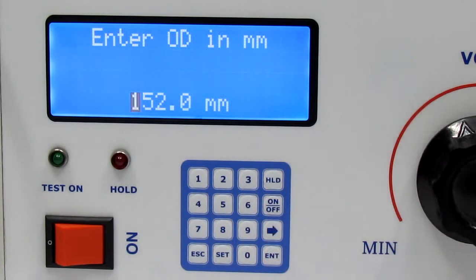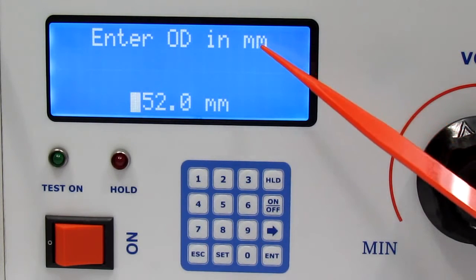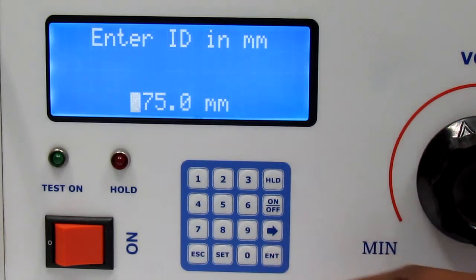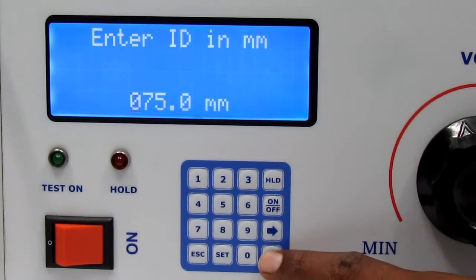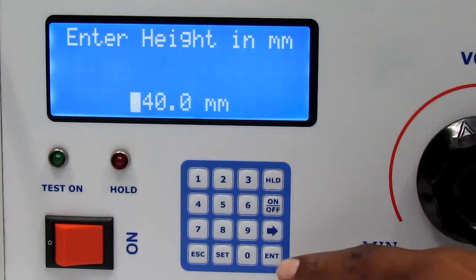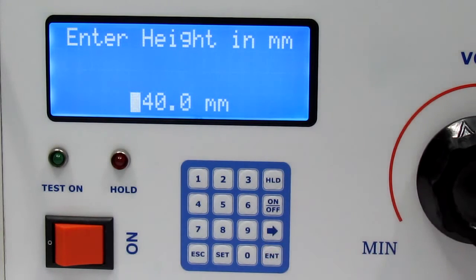Now you can see OD in millimeter. Here you have to enter outer diameter, inner diameter, height of testing specimen in millimeter by using numerical keypad and then press enter.